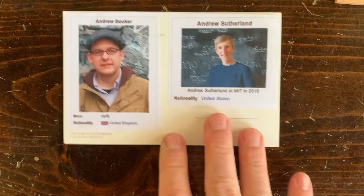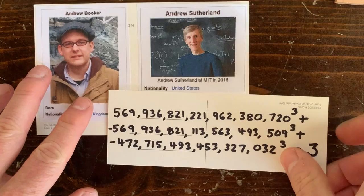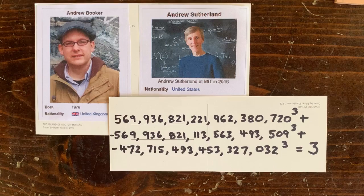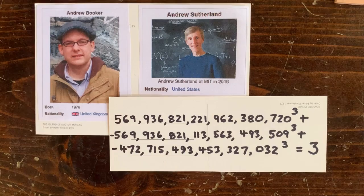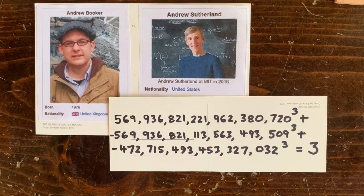And that was that until, in 2019, two guys named Booker and Sutherland found another solution. And this one goes like this. 569 quintillion 936 quadrillion 821 trillion 221 billion 962 million 380 thousand 720 cubed plus this other number cubed plus this other number cubed equals 3. So they discovered a counterexample and they had to go pretty far out to find it.